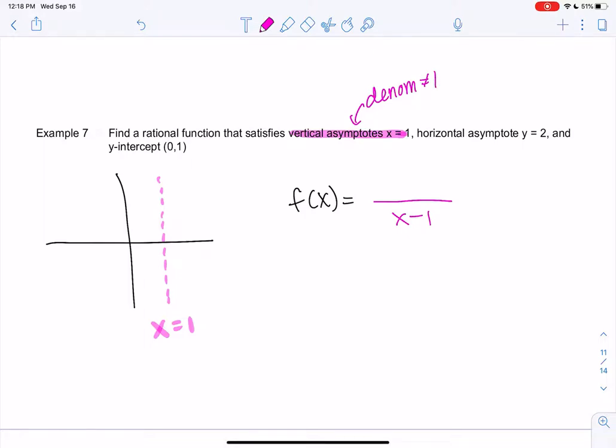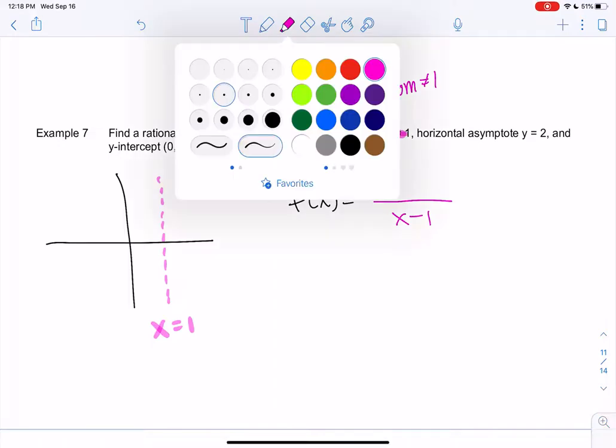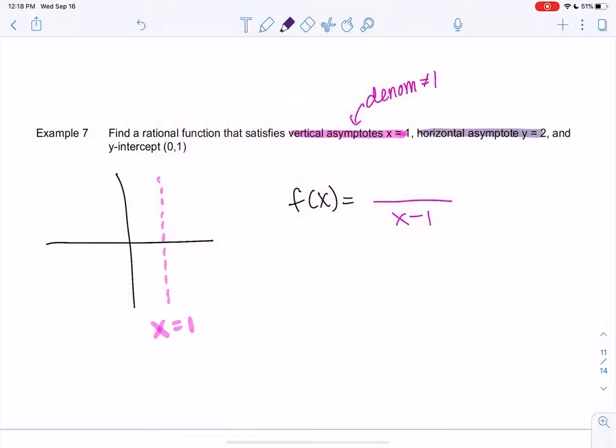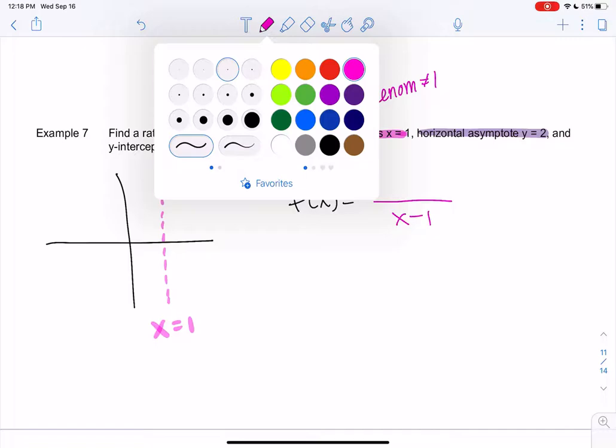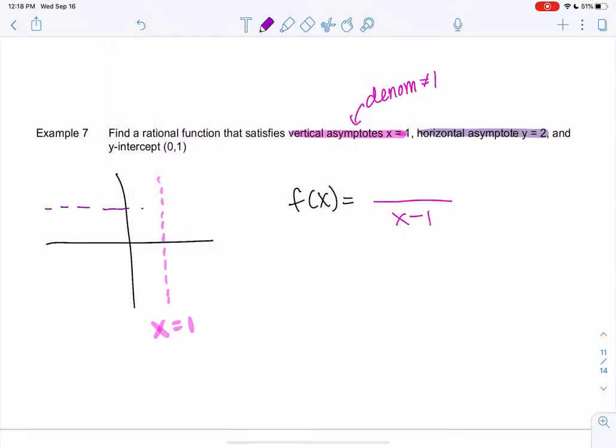We have a horizontal asymptote at y equals 2. Those are the leading terms, so I would have to have 2x so that 2x over 2 would go to 2. I need the powers to be the same as well so that we get a horizontal asymptote.